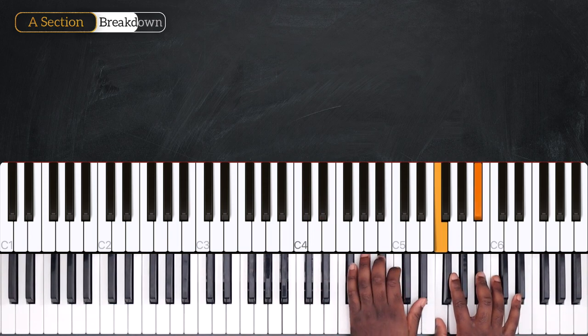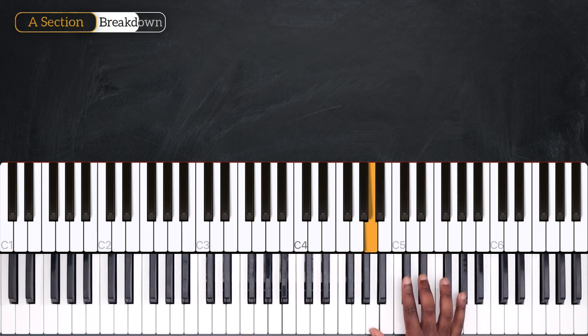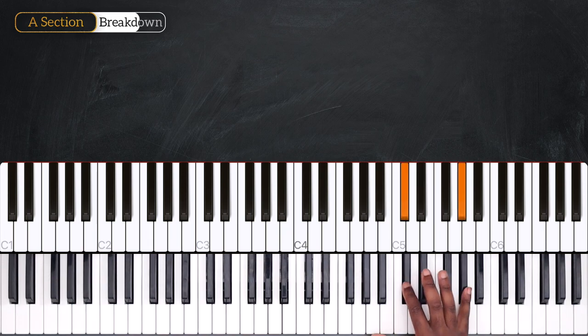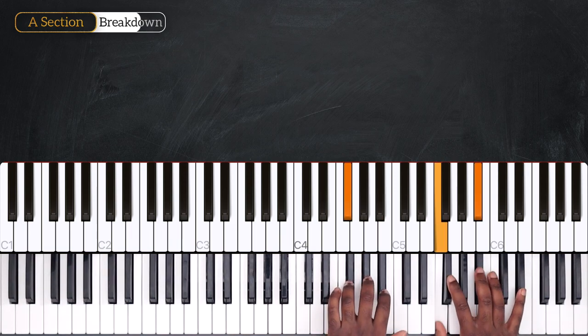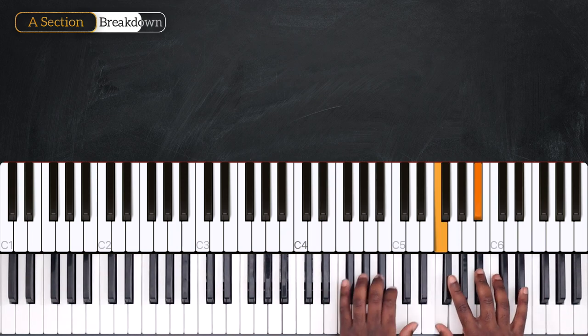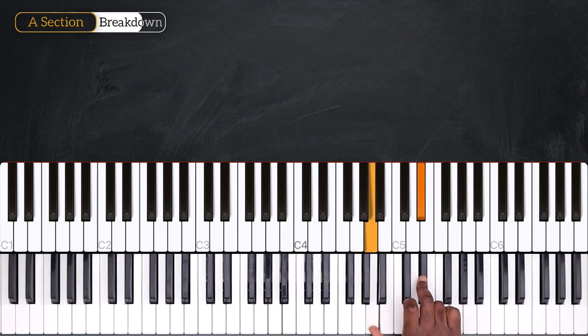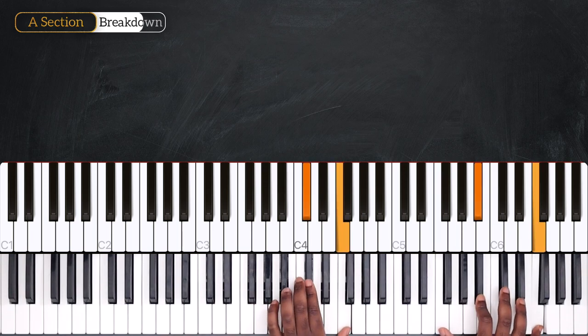And then now with Eb and Bb I replayed that pattern on my right hand. And then after playing this on the left I played this on the right hand: Db, Eb, Ab, A and Eb. So from the top. And then I'm back on Bb minor, going to Bb7.